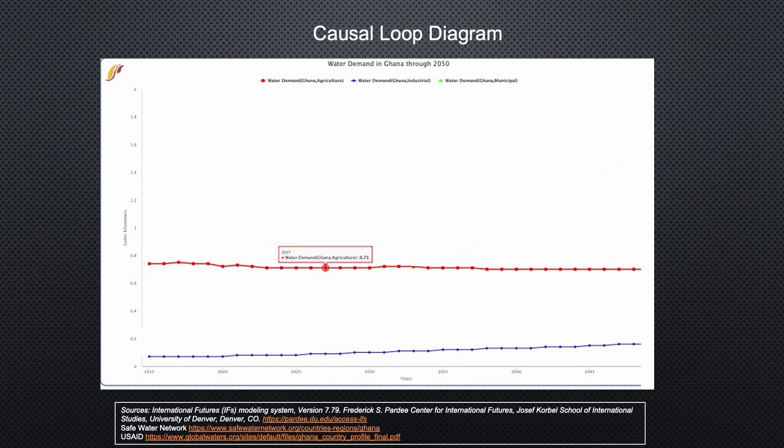In this chart, the demand for water for industrial use is in blue and agricultural use in red. There is no projected growth in water demand for these uses, and a lack of infrastructure is likely why. According to USAID, the groundwater sources — aquifers — do not produce water at a high enough rate for anything beyond domestic use, requiring water infrastructure to bring water from Lake Volta to other parts of the country for irrigation or industrial uses. Most of the water demand comes from increased municipal water requirements, and the demand rises as the urban population increases.